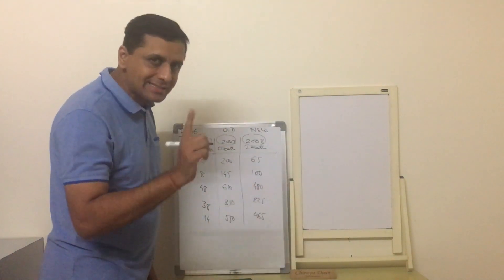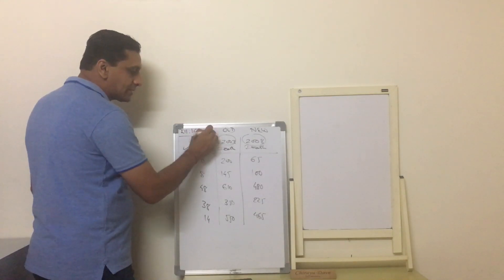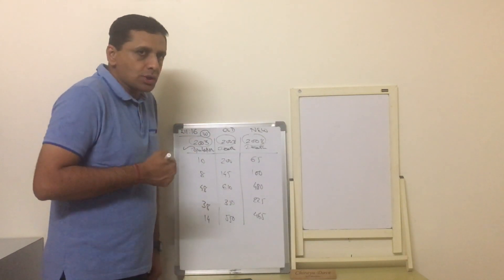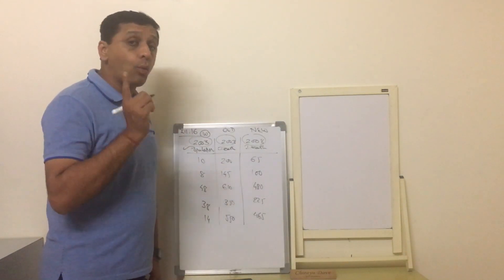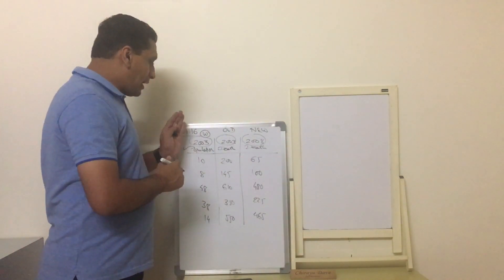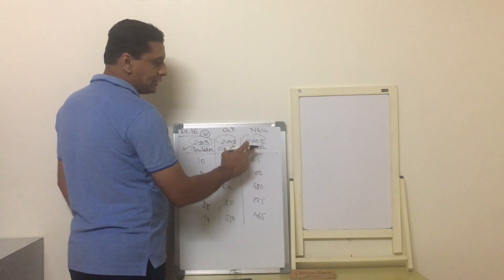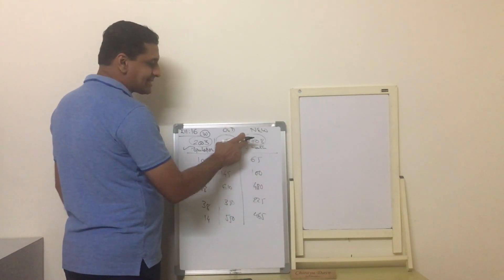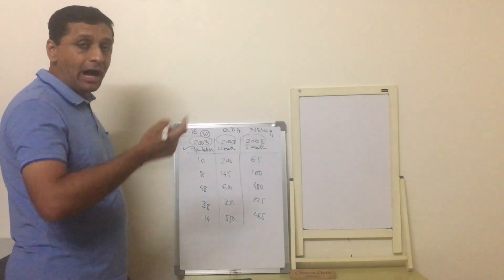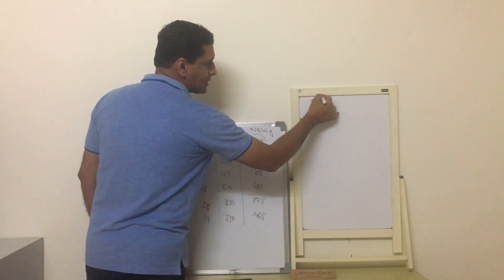But they have given again 2003 population, and they have specifically mentioned in the question itself that take 2003 population as a weight. Which means in this question we are not supposed to find weight - weight is already given and assigned. Now we are supposed to find out which one is old, which one is new. This is the old death rate, this is the new number of deaths. This is the old price, this is the new price.